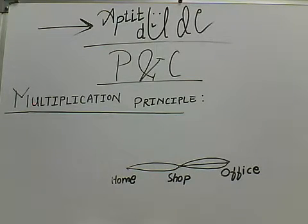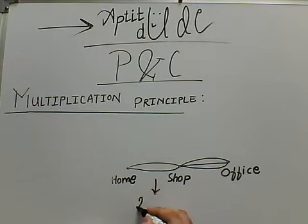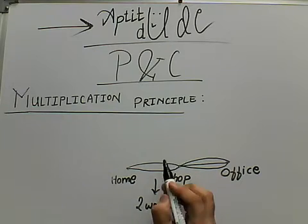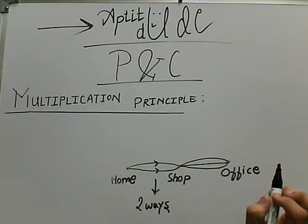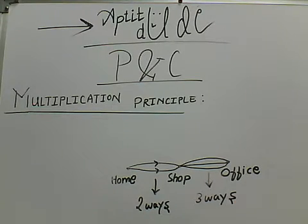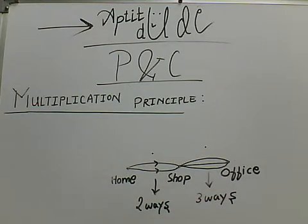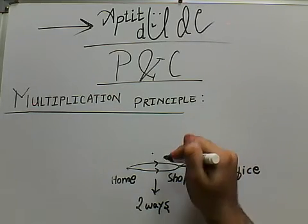Now my question is: how many ways are there in which I can get to my office from my home? First, let's find out how many ways there are to go from my home to the shop. With the help of the addition principle, we can say there are only two ways — either I go through this way or through this way. Similarly, I have three ways to go to the office from the shop. I applied the addition principle here because we had only one work to do, but we had two or more ways to do it, so I added all these ways to get the answer.